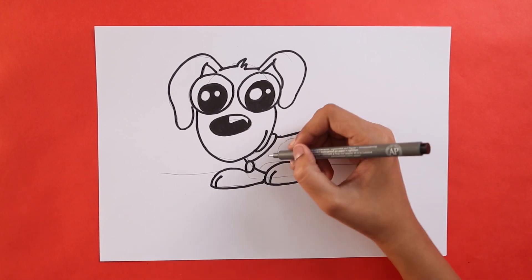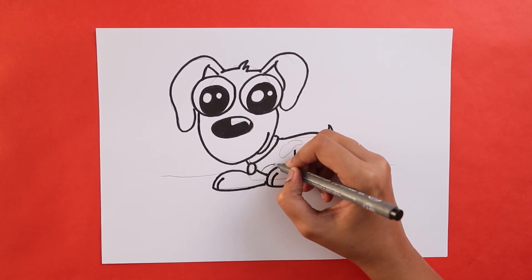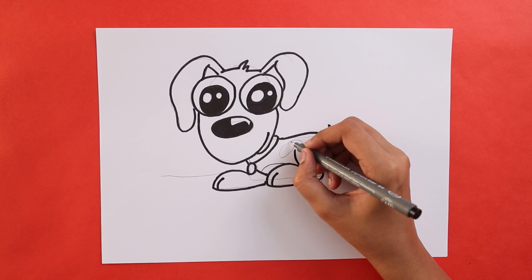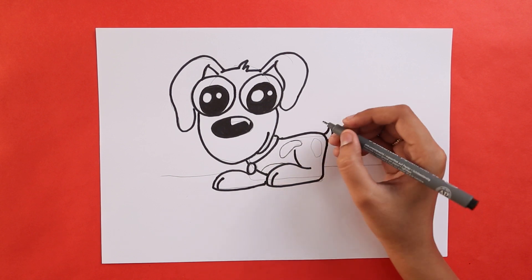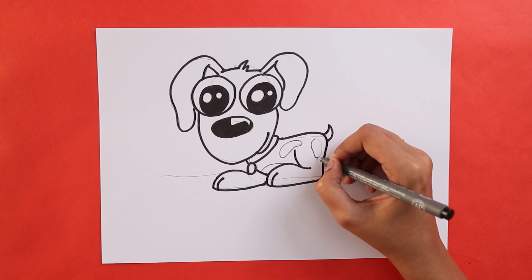So for the little patches on the dog, you all can use a finer marker instead of the one used before. You can also make another circle on the inside of the eye with the thinner marker.